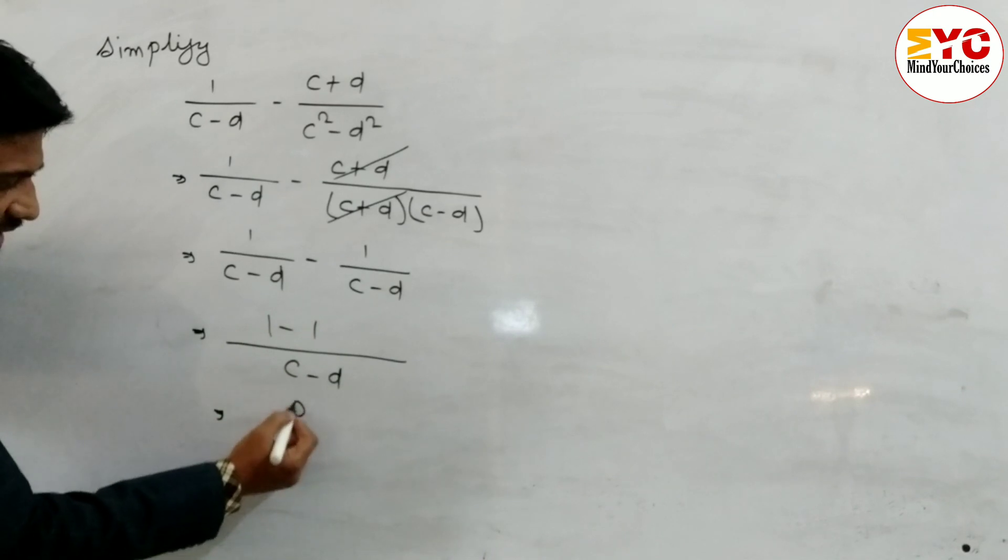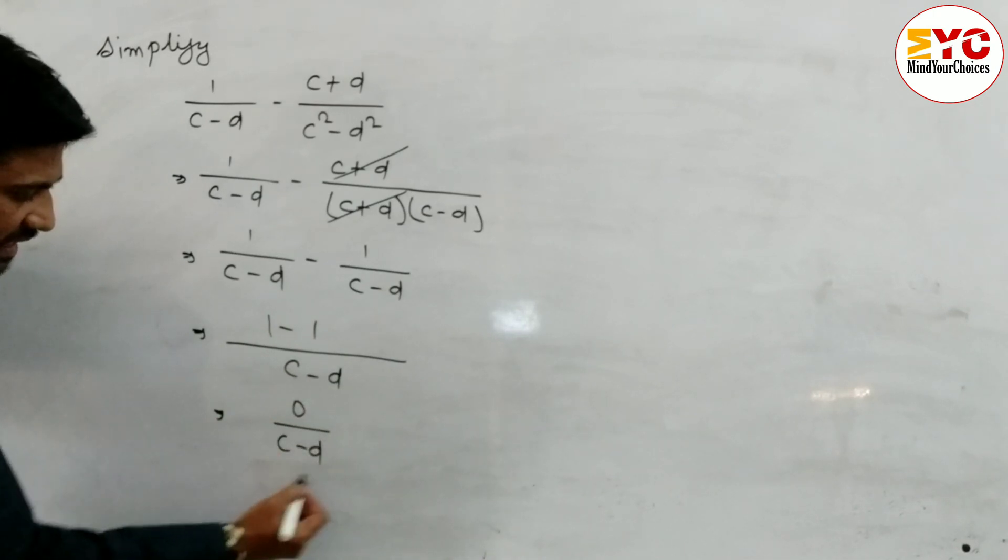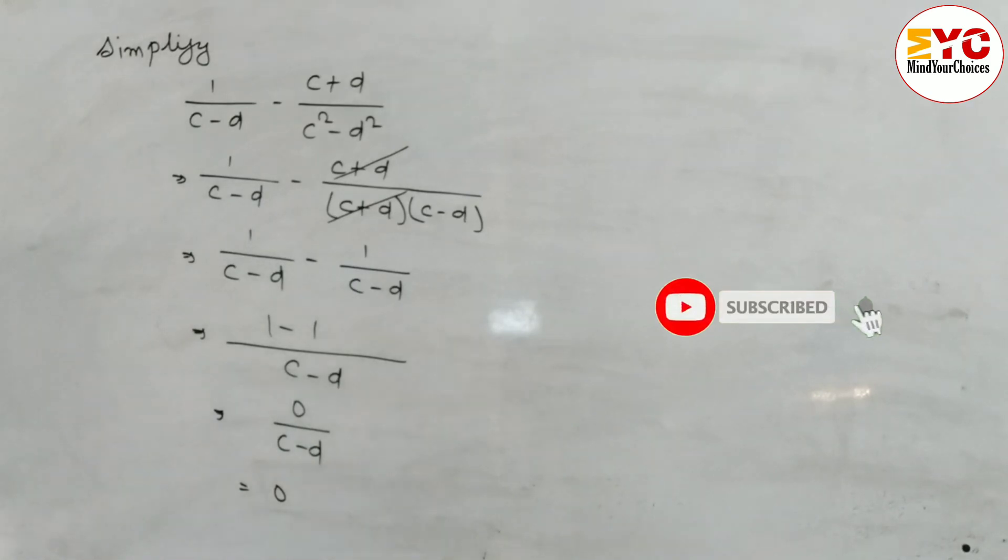1 minus 1 is 0, divided by c minus d is equal to 0. If you understand, please hit the like button.